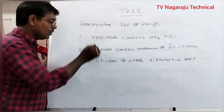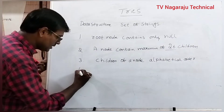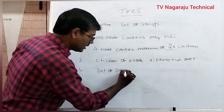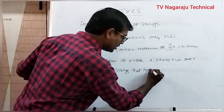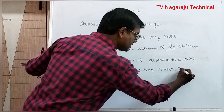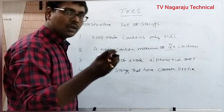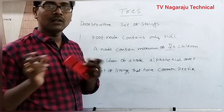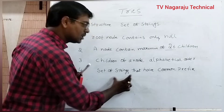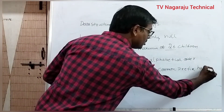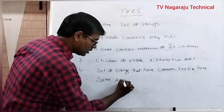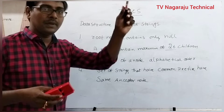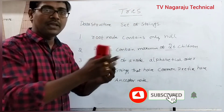One more important thing: consider a set of strings that have a common prefix. Suppose I have the strings 'ball' and 'bat' — these two strings have the common prefix 'ba'. Ball contains 'ba', bat also contains 'ba'. The set of strings that have a common prefix have the same ancestor node, in a sense the same parent node. Once the string 'ba' is written, there is no need to write 'ba' again.